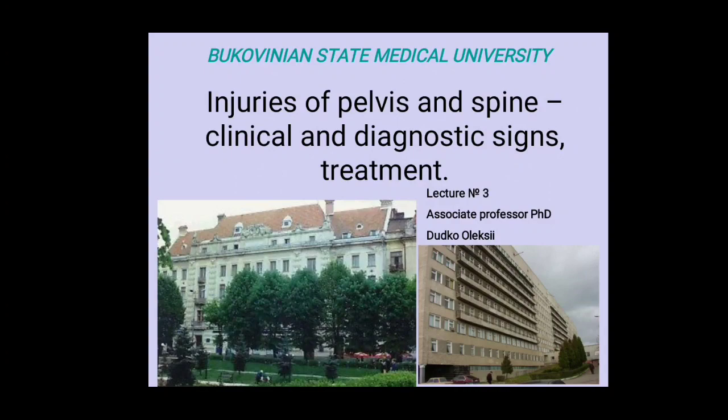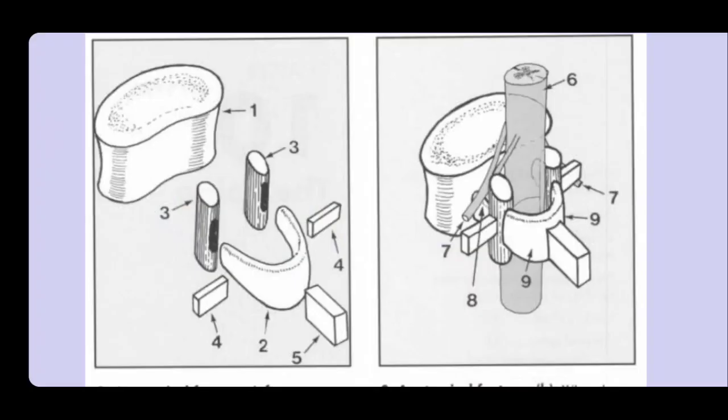If the injury occurred at the cervical level, quadriplegia is usually developing. In many cases patients don't recover completely from this deficit. The vertebral column consists of 33 vertebrae: seven cervical, 12 thoracic, five lumbar, five sacral, and four coccygeal. They are joined together by ligaments and muscles.